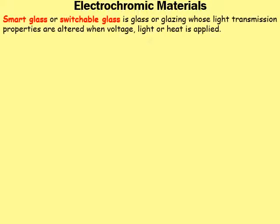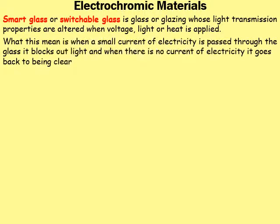The next smart material I'd like to discuss is electrochromic materials. I'm emphasising the word 'electro' because that implies the external stimulus is something to do with electricity. Smart glass, or switchable glass, is glass whose light transmission properties are altered when voltage, light, or heat is applied. More simply, when a small current of electricity is passed through the glass, it blocks out light, and when there is no current, it goes back to being clear.